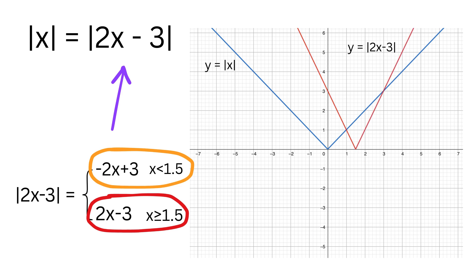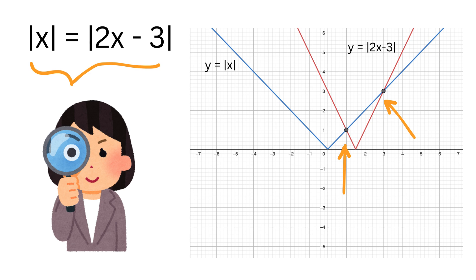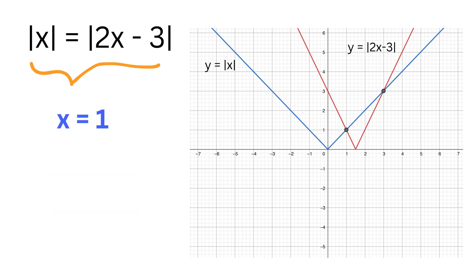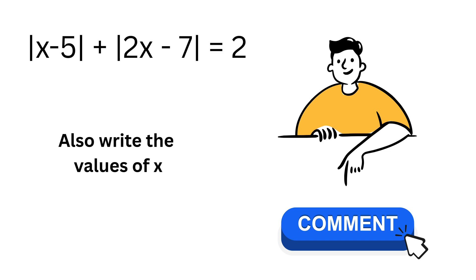When you put both pieces together, you again get a V-shaped graph, but this one is shifted to the right and tilted differently compared to the graph of y equals the absolute value of x. To find the solutions graphically, we look for the points where the two graphs cross each other. Observing the graph carefully, you will see that the two curves meet at two points: one at x equals 1 and the other at x equals 3. These are exactly the solutions we found using the algebraic method with critical points, confirming that x equals 1 and x equals 3 are the correct answers.